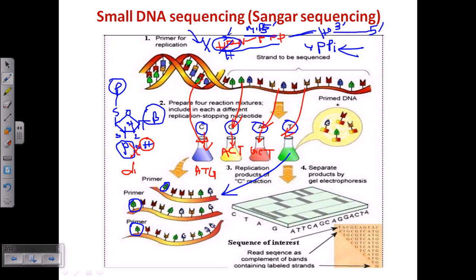We take these bands and arrange them to find the overlapping regions. By arranging those bands we get a coherent structure, and by combining all those structures we obtain our desired sequence. That is the actual method of Sanger sequencing. Remember, this sequencing can only work for small DNA sequences — that is why it is called small DNA sequencing — and for large sequences we cannot rely on Sanger sequencing.